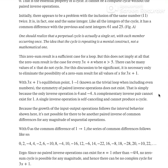So we reach our final conclusion. Ergo, since no paired inverse operations can exist for n=1 other than -4, 4, no zero-sum cycle is possible for any magnitude, and hence there can be no complex cycle for 3x+1. Thank you.